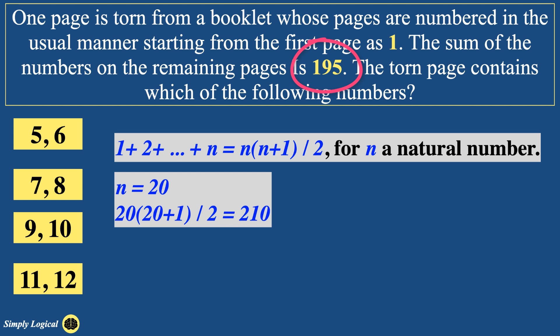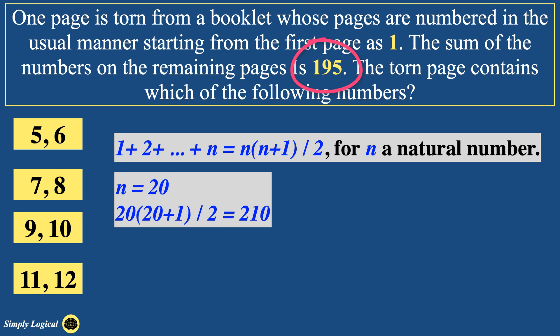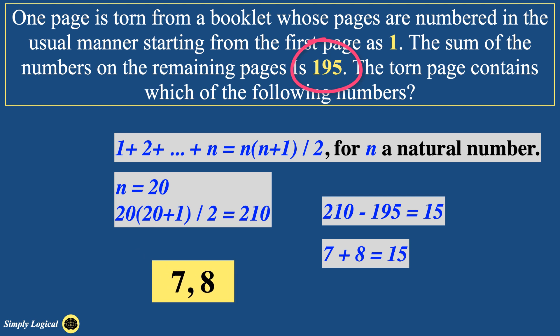This can be the right number which we are looking for, because for n equals 19, sum results in 190 which is less than 195. Hence 19 must be rejected. Thus number of pages in the book is 20, and now the task is to find the torn page. So now we need to subtract 195 from 210, which results in 15. So what are the two consecutive numbers whose sum will result in 15? They are nothing but 7 and 8. Thus the answer to the problem is 7 and 8.